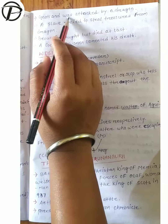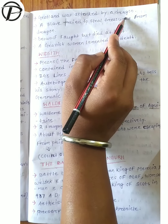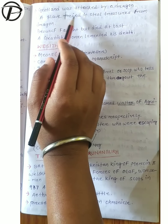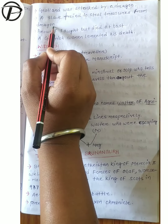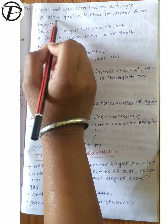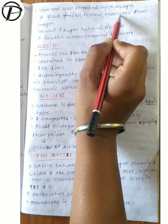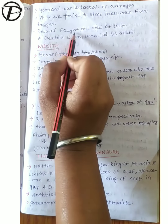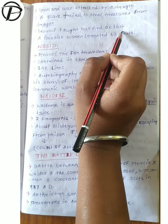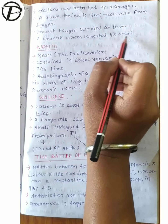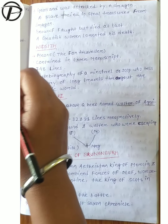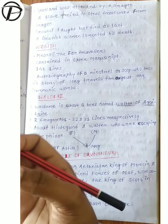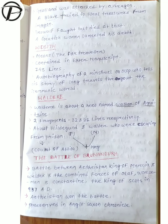Next, Geatland was attacked by a dragon. A slave tried to steal treasures from the dragon, which caused the dragon to attack Geatland. Then Beowulf again fought but died at last, and Geatland lamented his death. This is all about Beowulf, which describes Beowulf's selflessness and his adventures.